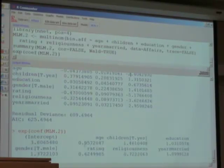And if I look at it here, it's 5 percent decline. So with an additional year, if you get one year older, the odds of having an affair are 5 percent lower than usual.